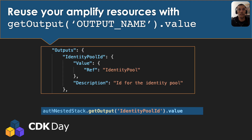Now that we've migrated our Amplify app into CDK, I'd like to highlight that the CFN Include construct exposes an API enabling you to easily access any output of the included stack, so you can link your Amplify-generated templates with your CDK ones. For instance, the auth template has a specific output called 'identityPoolId', which you can easily access using the 'getOutput' function and the 'value' attribute.